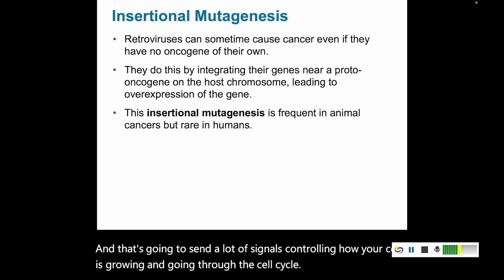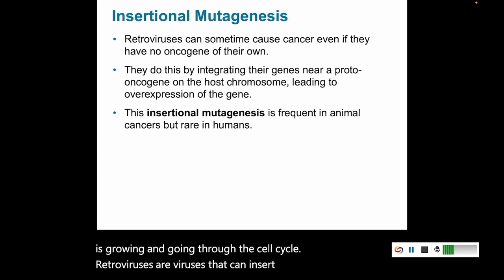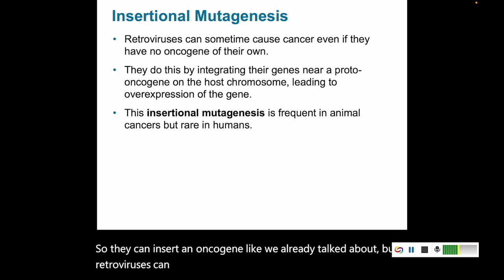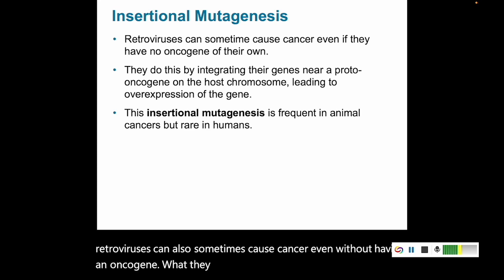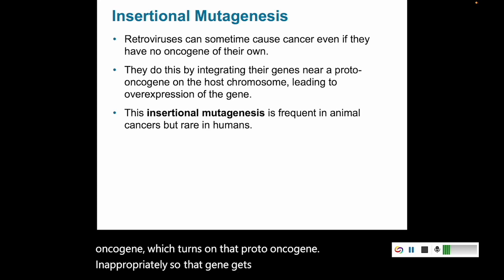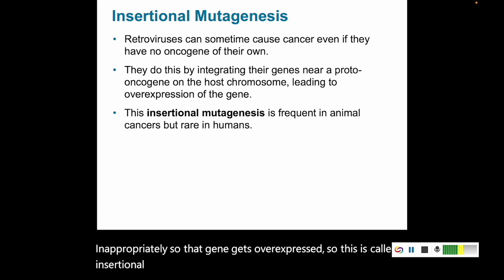Retroviruses are viruses that can insert their own DNA into your DNA. They can insert an oncogene directly, but retroviruses can also cause cancer without having an oncogene — by putting their genes near a proto-oncogene, which turns on that proto-oncogene inappropriately, causing that gene to be overexpressed. This is called insertional mutagenesis. We see this a lot in animals, but it's rare in humans specifically.